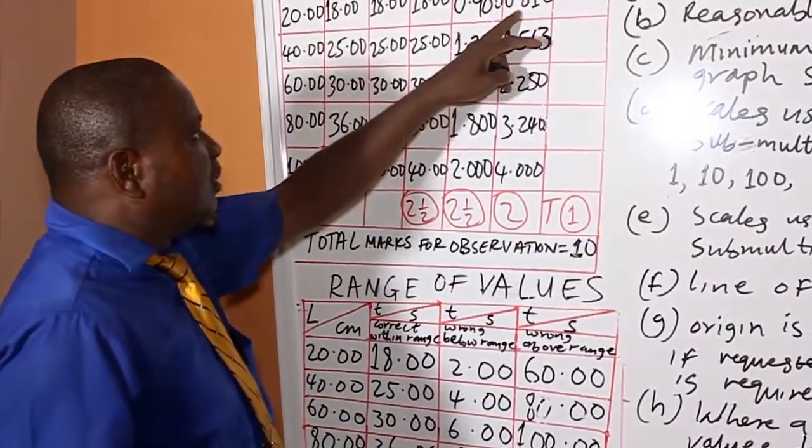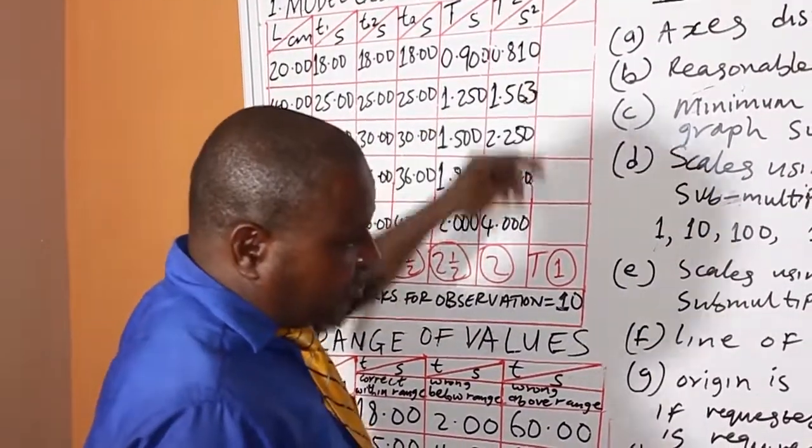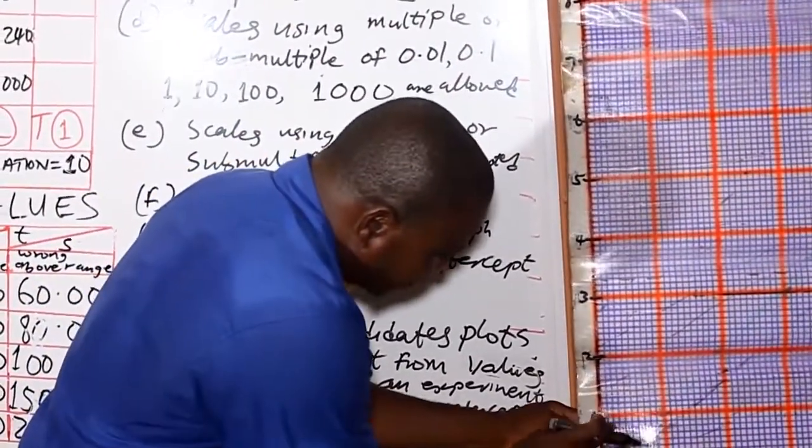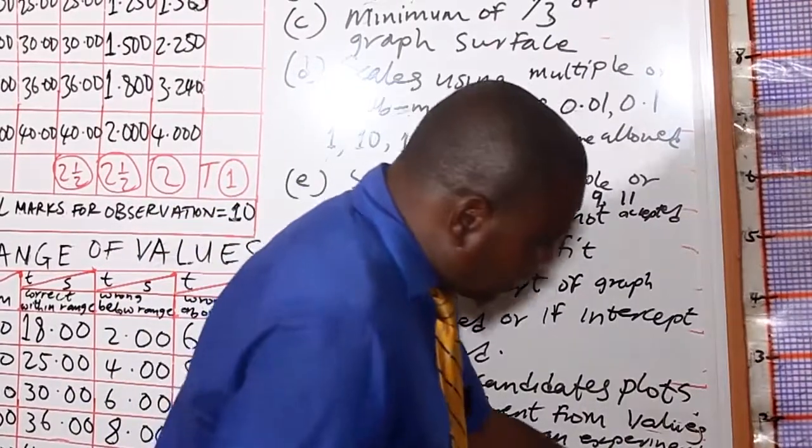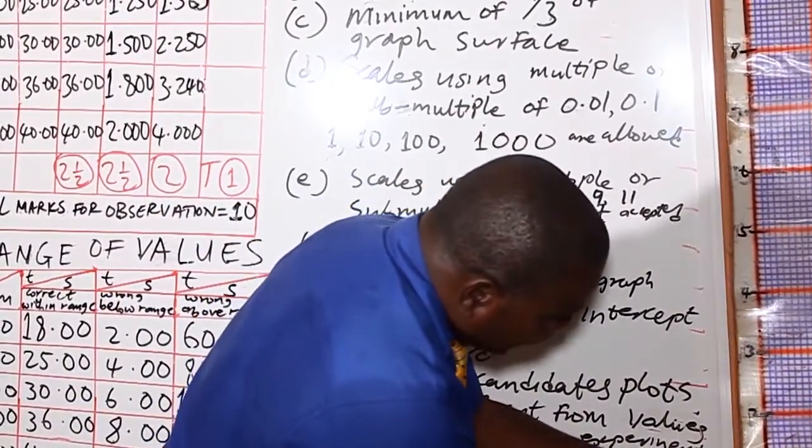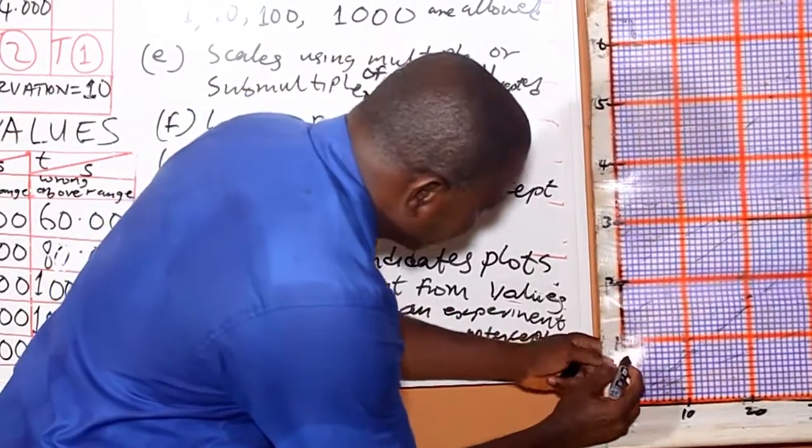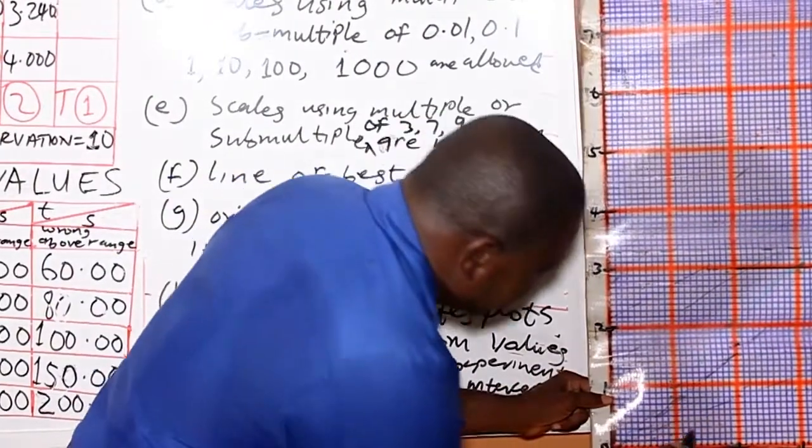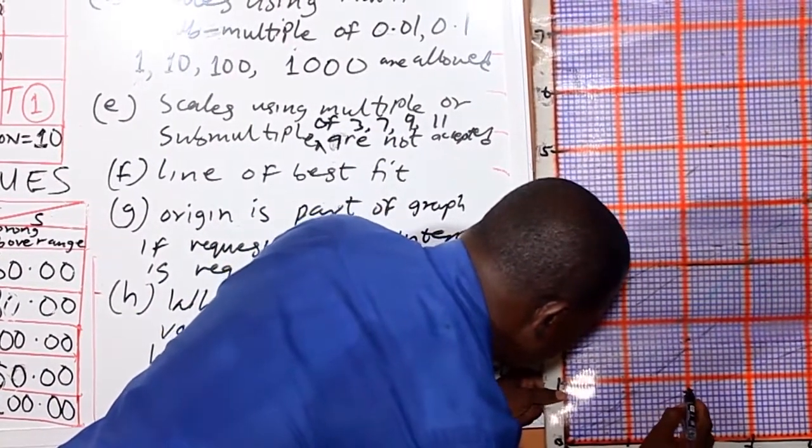Now, we want to start our plotting. 0.81. Before you can get 0.81, you are going to count 8 small squares again. 1, 2, 3, 4, 5, 6, 7, 8. Then, you produce it to 20. This is 20. You trace it as well. You get to that count.